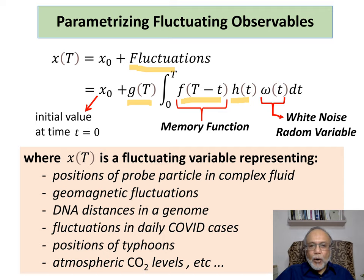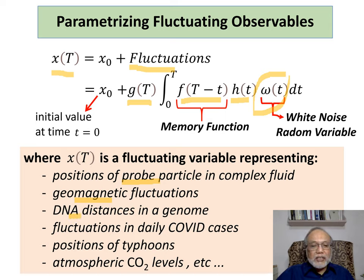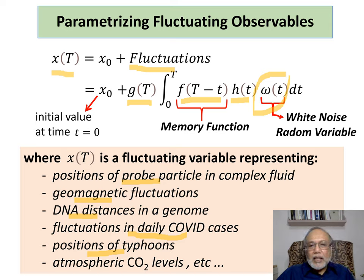These g, f, and h are all modifying the white noise random variable, and we'll be integrating them from some initial time 0 to some final time t. The fluctuating variable X could represent many things: the positions of a probe particle in a complex fluid, fluctuations in geomagnetic fields, varying DNA distances in a genome, daily cases in COVID-19, positions of a typhoon, or fluctuations in rising atmospheric carbon dioxide levels.